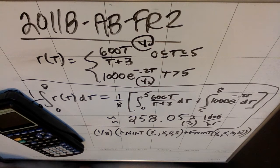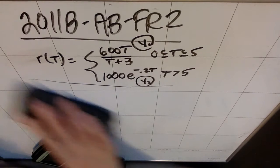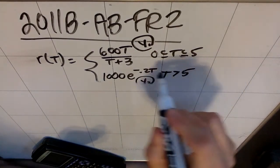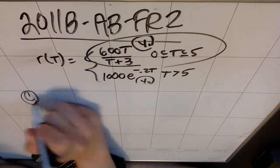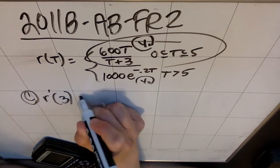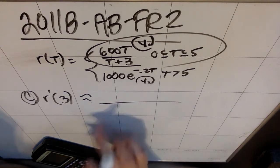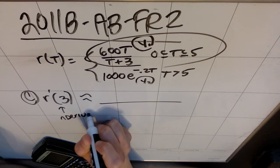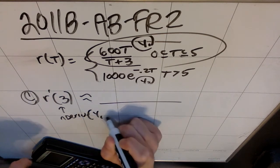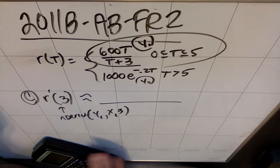All right, part c. Find r prime of 3. Using correct units, explain the meaning of this in the context of the problem. So, I can find r prime of 3 on my calculator. I know I want to derive this function. So, for part c, r prime of 3, they just want me to go ahead and give an answer. r prime of 3 is going to be n derived. So, I have two ways to do this. I can n derive the thing I called y1 with respect to x at 3. Or, I can press.